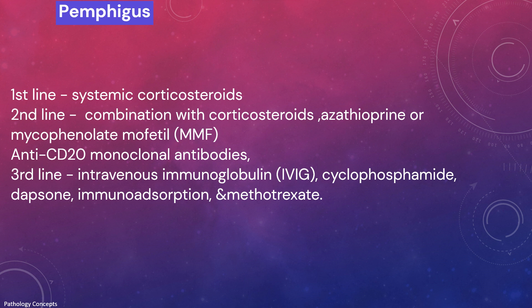Treatment: the first-line treatment for mild pemphigus is systemic corticosteroids, which take several weeks to achieve a response. Second-line treatment combines corticosteroids with either azathioprine or mycophenolate mofetil. Anti-CD20 monoclonal antibodies such as rituximab and obinutuzumab have also been used in conjunction with corticosteroids as first-line treatment in moderate to severe pemphigus vulgaris. Third-line treatment includes intravenous immunoglobulin, cyclophosphamide, dapsone, immunoadsorption, and methotrexate.